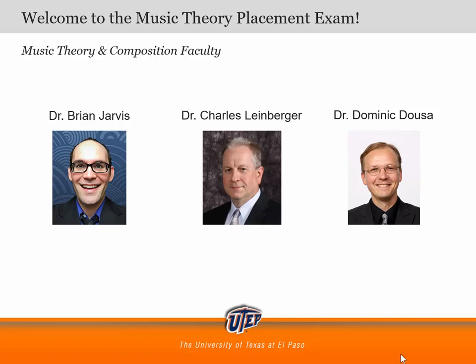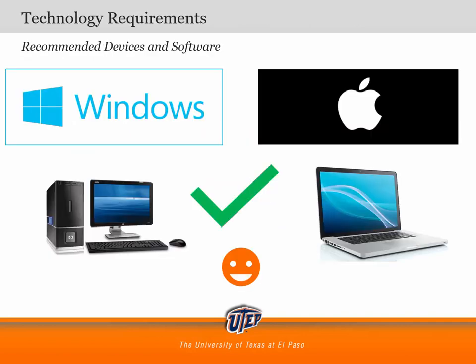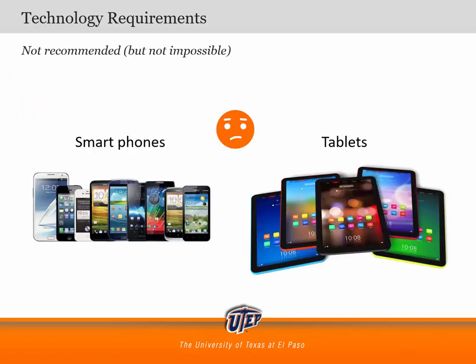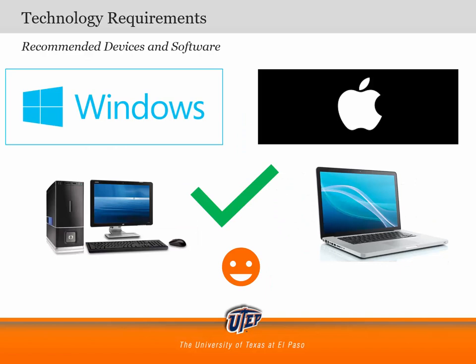Before you get started, here is what you need. You will have the most reliable experience if you take the exam using an internet-connected Windows or Mac laptop or desktop computer. You can take the exam using a smartphone or tablet, but this is not recommended, as it will take you longer and is likely to change your answers by using autocorrect, and it has a tendency to add extra spaces to your answers, which the computer will read as incorrect answers. A Windows or Mac laptop or desktop computer is strongly recommended. You can only take this exam one time, so you don't want unreliable technology to get in the way of proper placement in our music theory sequence of courses.